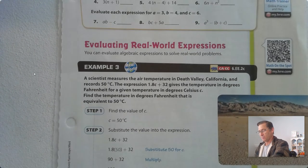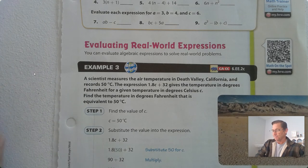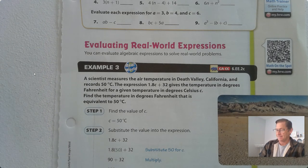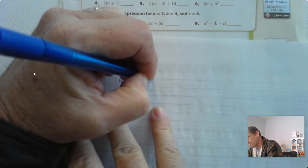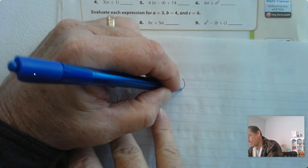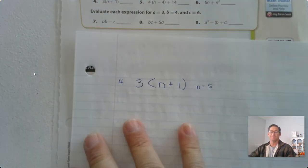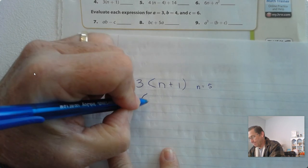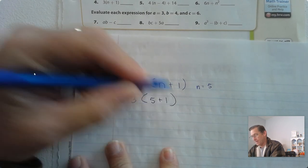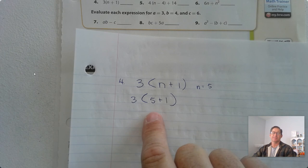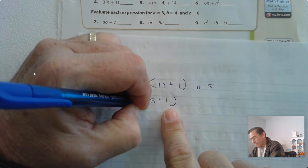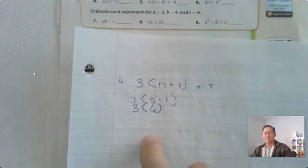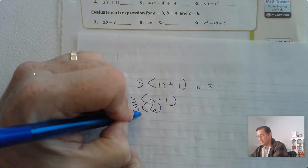Now let's practice and solve some problems. Number 4: we have 3 times the product of n plus 1, and n equals 5. Substitute 5 for n. Now we have 3 times the sum of 5 and 1. Parentheses have to come first, so we have 3 times 6. Now we only have one operation left, so 18.